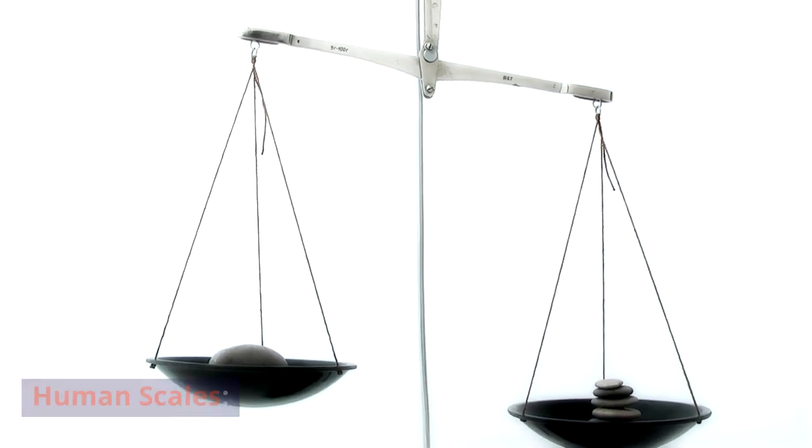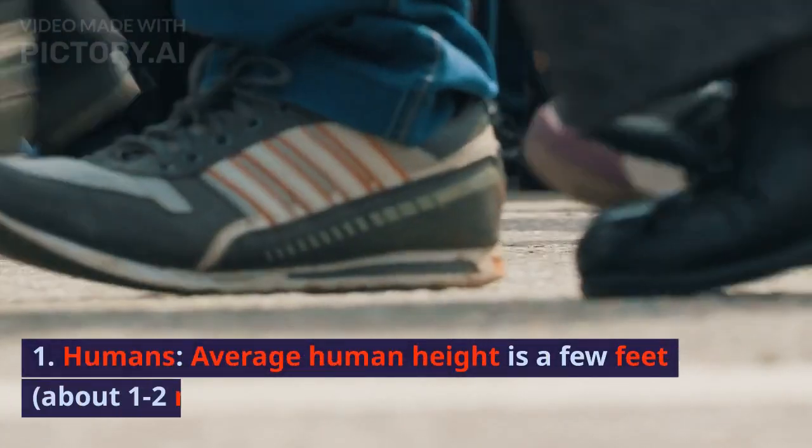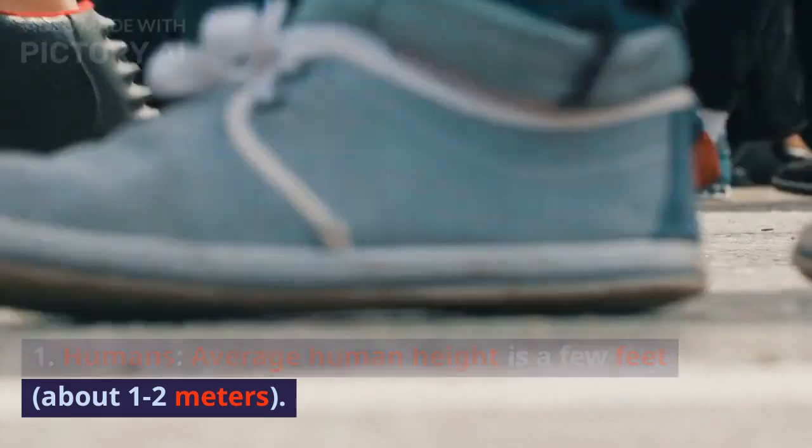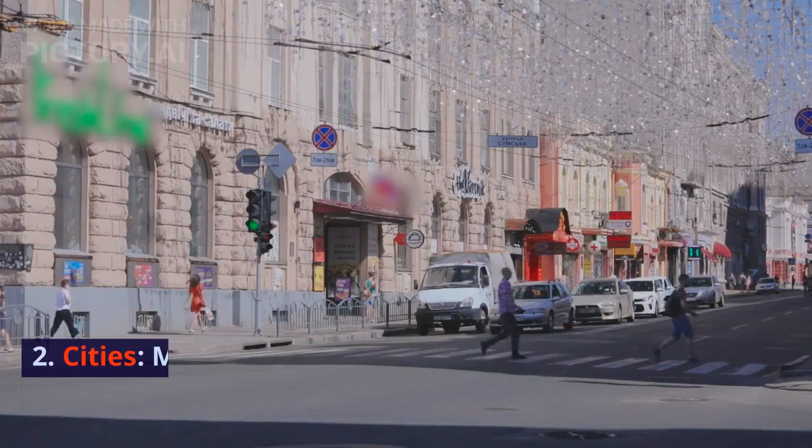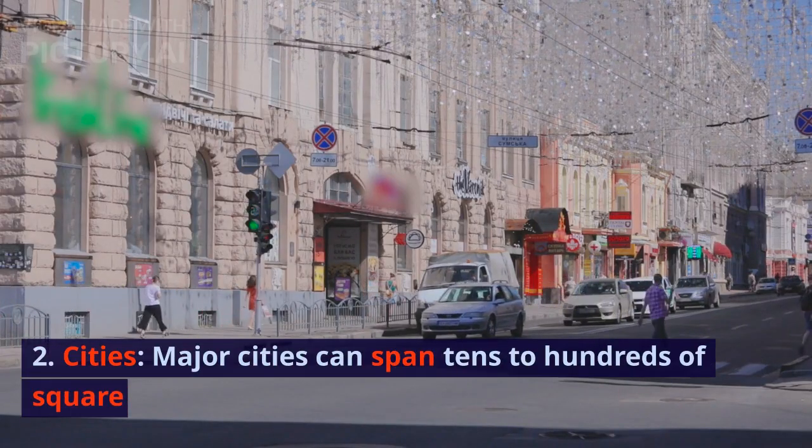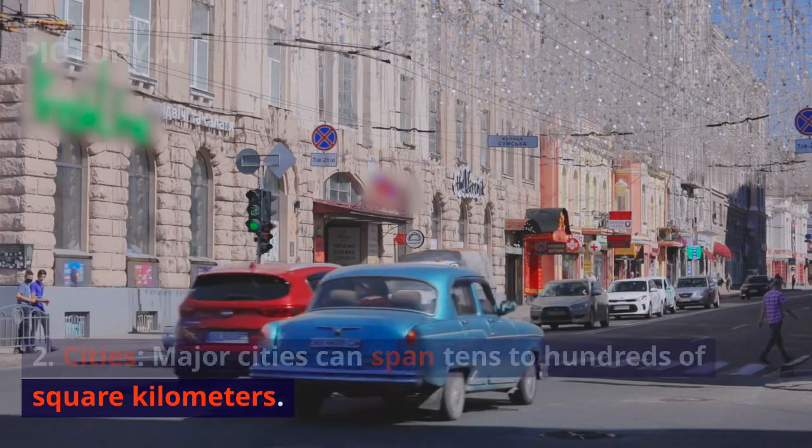Human Scales: 1. Humans - average human height is a few feet, about 1-2 meters. 2. Cities - major cities can span tens to hundreds of square kilometers.